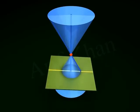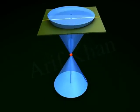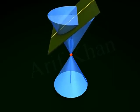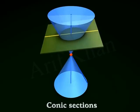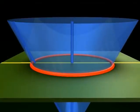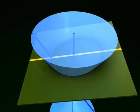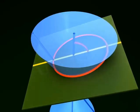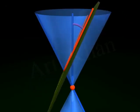If a plane intersects a double right circular cone, we get two-dimensional curves of different types. These curves are called conic sections. Depending on the angle made by the plane with the vertical axis of the cone, the plane can cut the cone in three different ways.